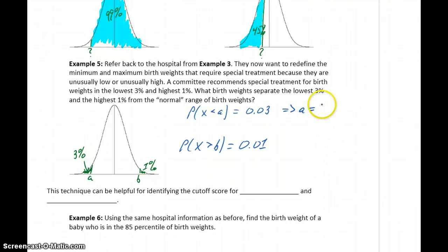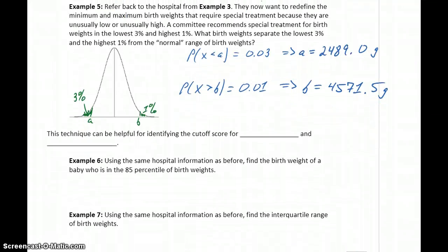So we calculate our value for A to be about 2,489.0. And we calculate our value for B to be about 4,571.5 grams. So under these new recommendations, birth weights under 2,489 or over 4,571.5 would require that additional attention, some additional treatment.